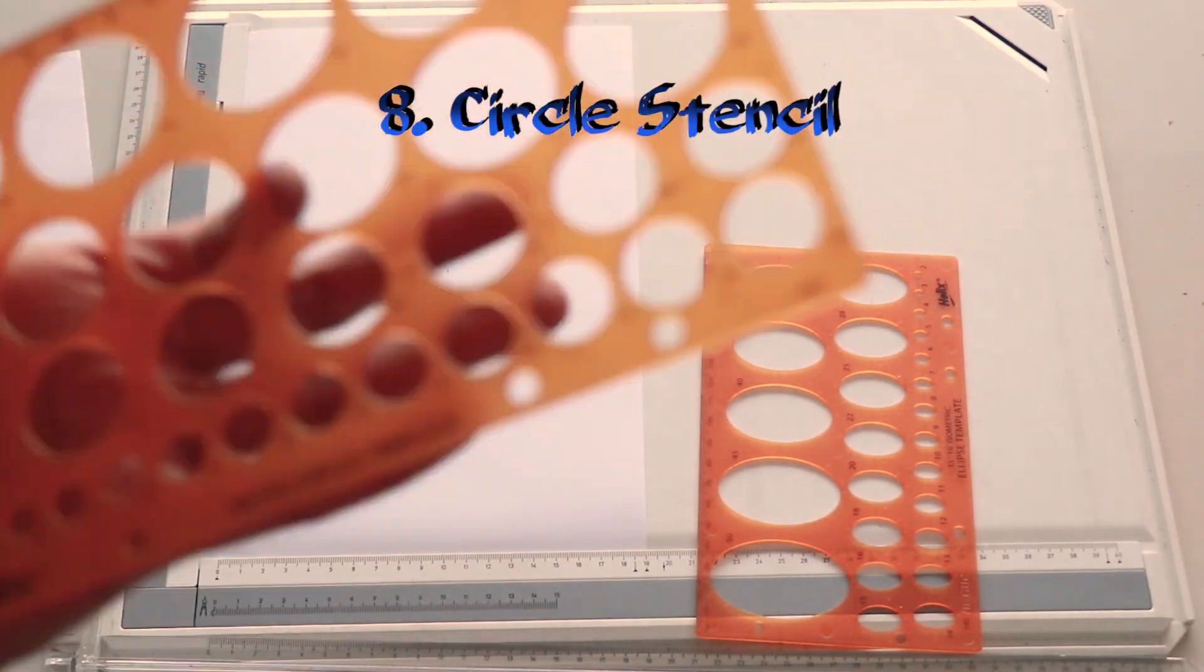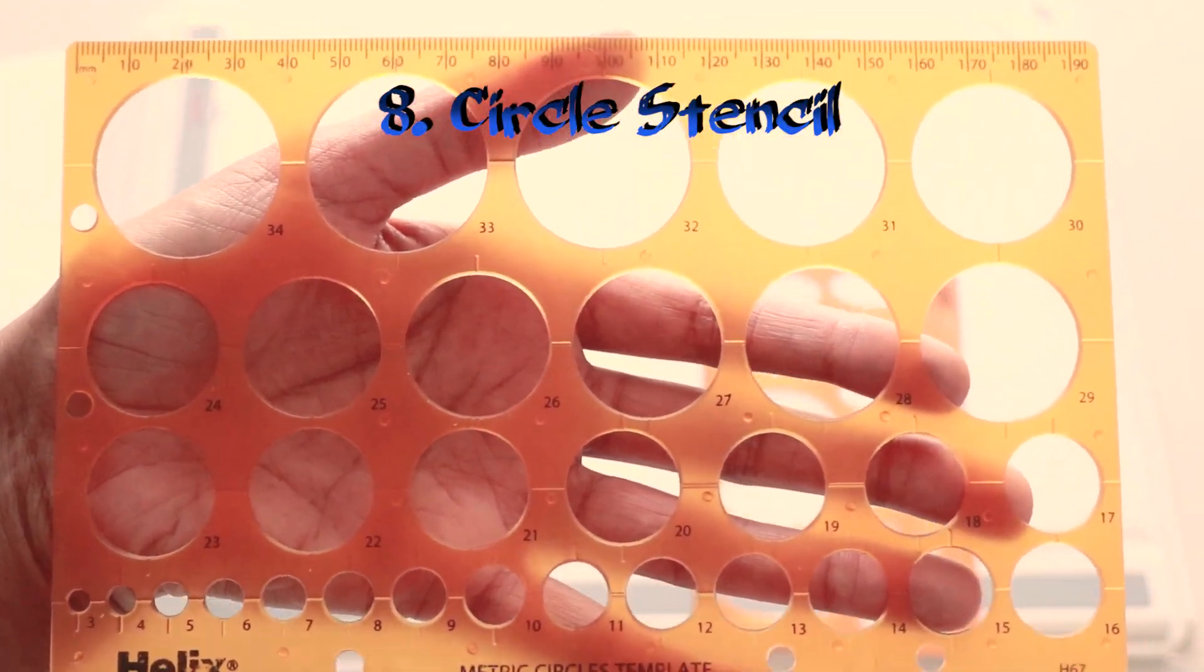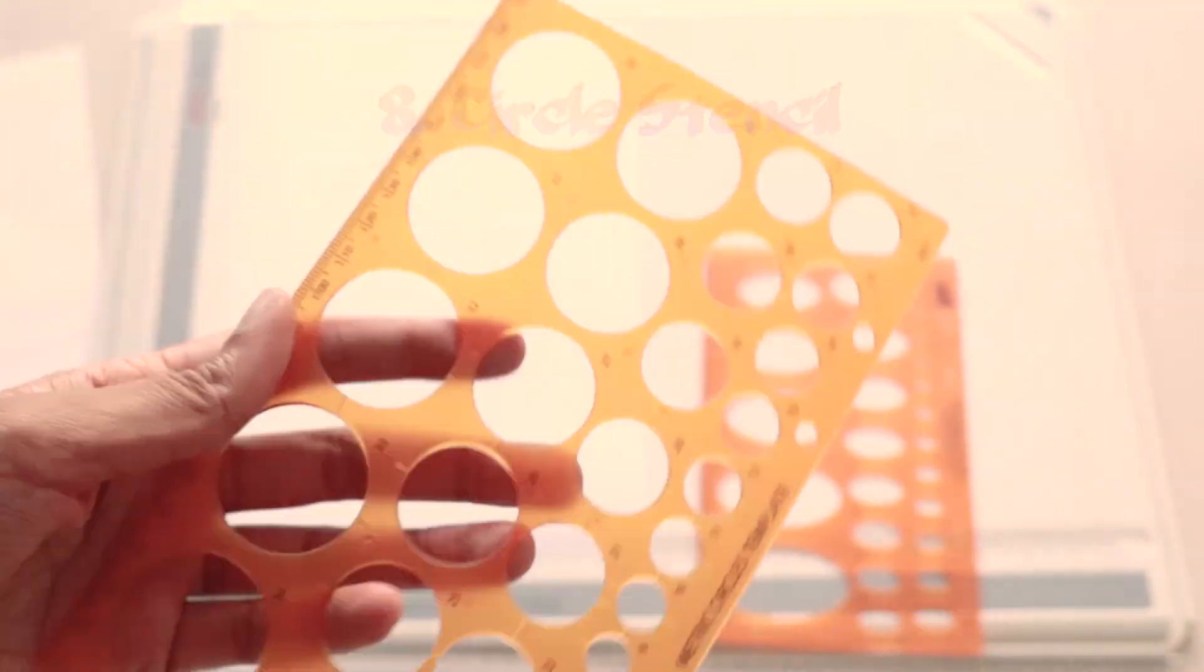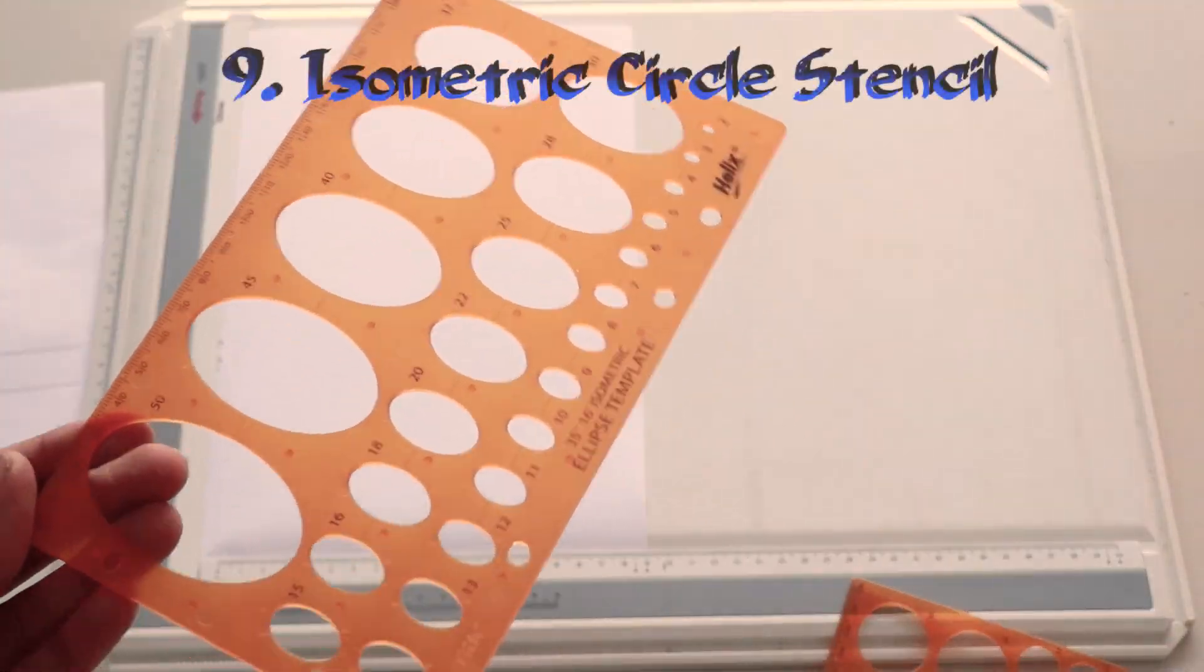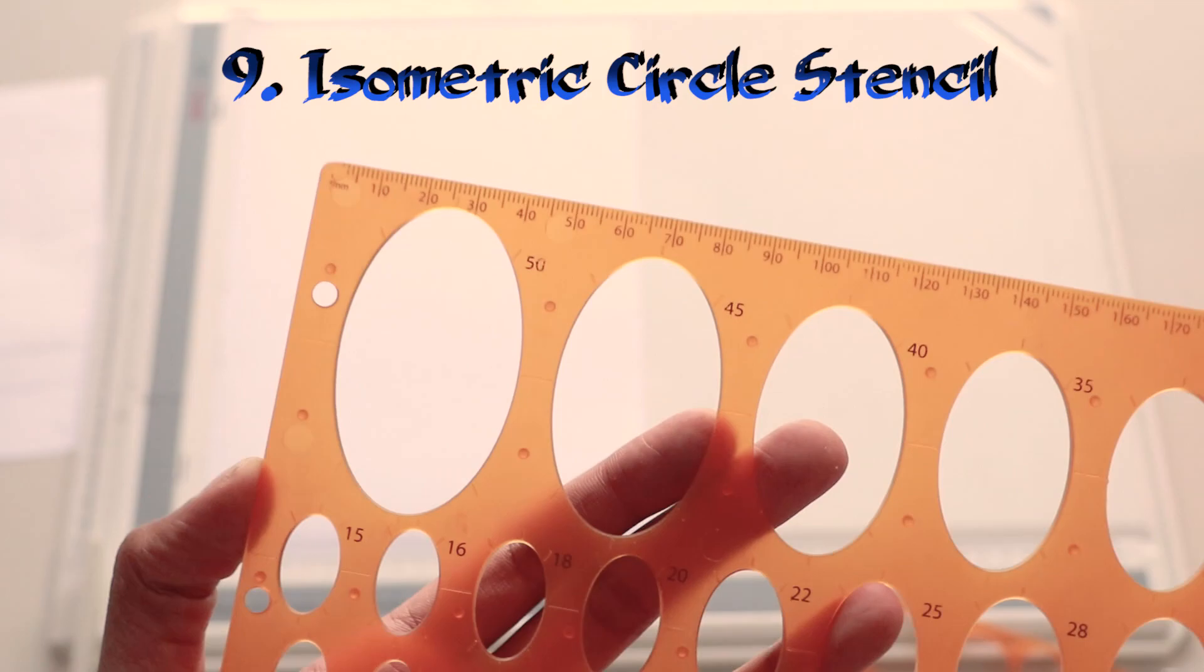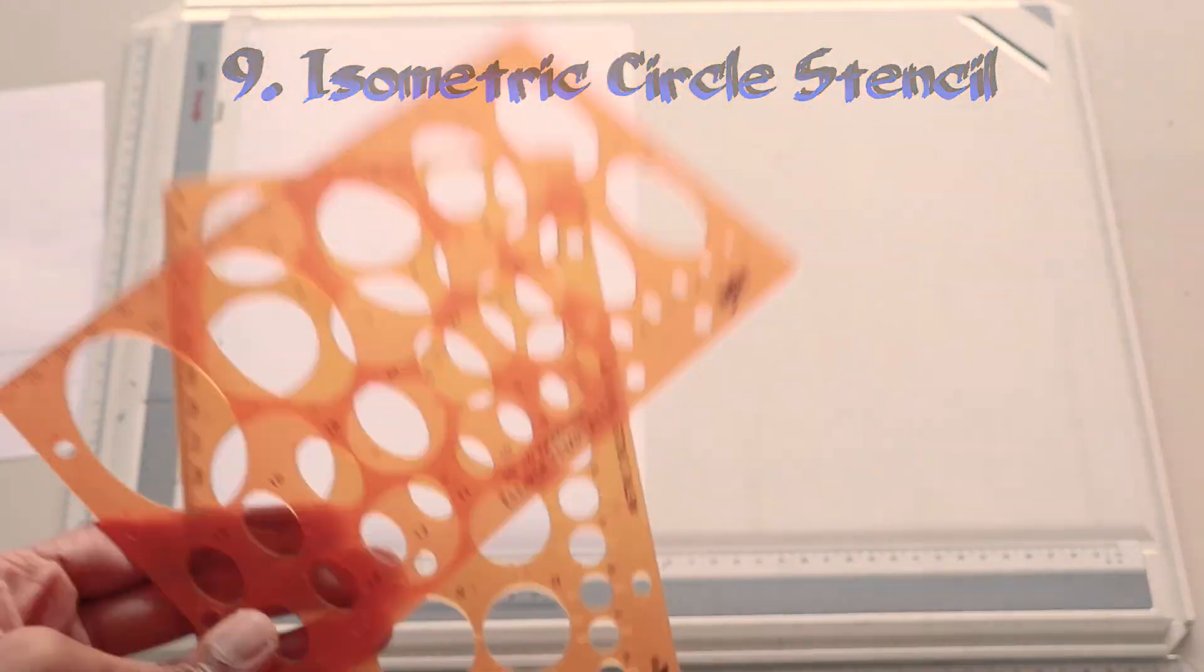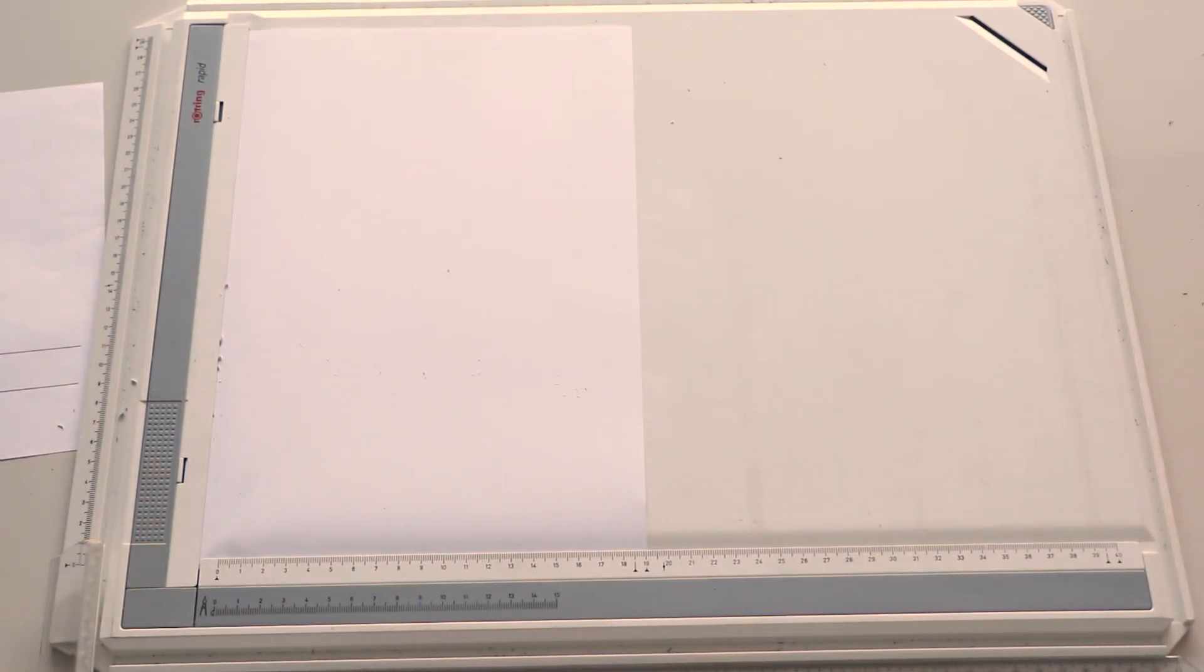Circular stencils and isometric circular stencils are useful for helping you draw circles really fast. However, the specific size of the circle that you want to draw has to be available on the stencil, else you can't use it. But then you have your compass. No problem.